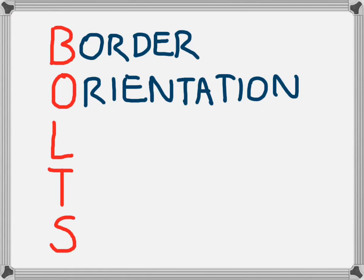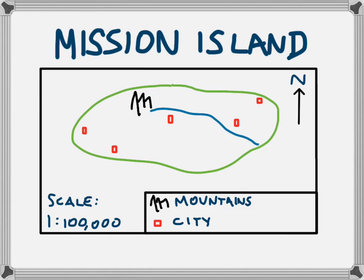The O of BOLTS stands for orientation. The orientation is the direction on the map. We can see the orientation here, which is showing that north is facing upwards. That will be true on most maps, but not on all maps.